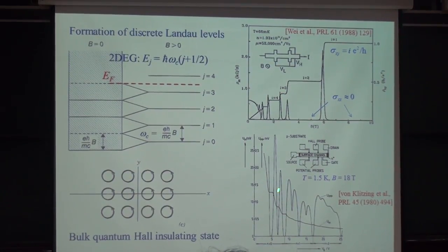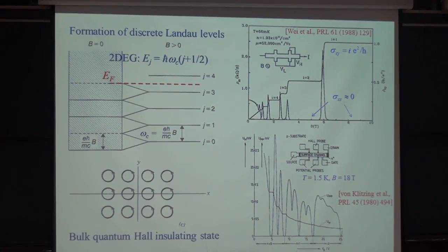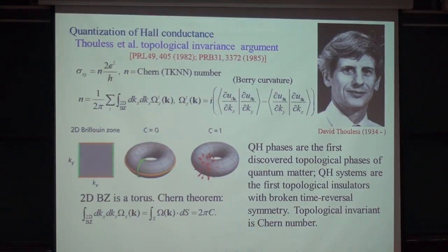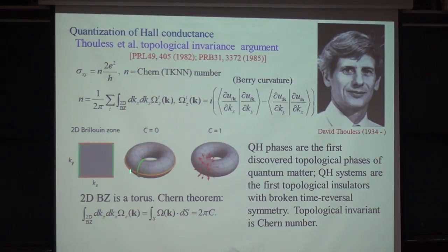That's basically the phenomenological explanation of why we see this quantized Hall resistance and also why it's insulating along the longitudinal direction. Then people ask fundamentally why Hall conductance is quantized. One or two years later, David Thouless found that this quantized integer number can be written as Berry curvature integrated over the two-dimensional Brillouin zone.